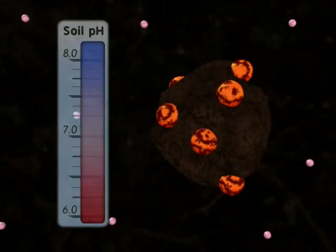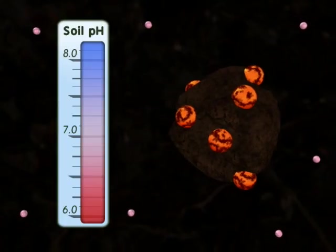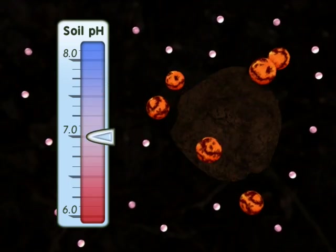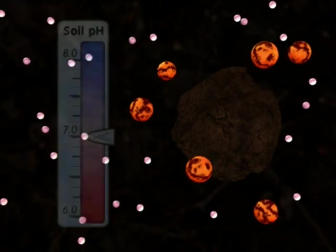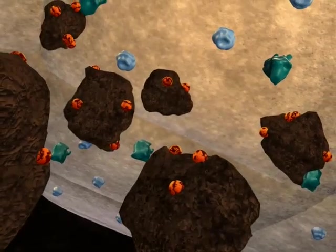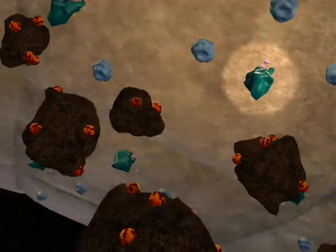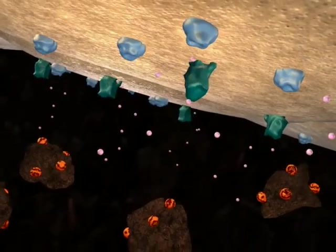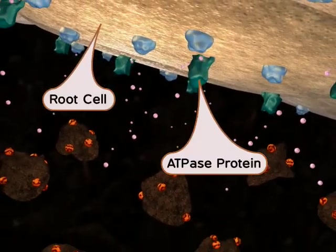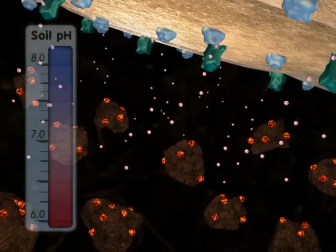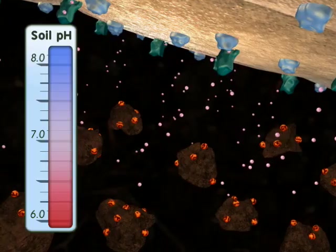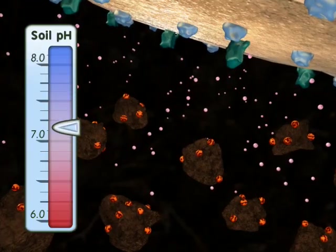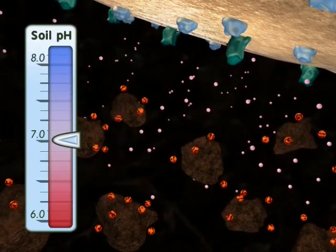Because of its chemical properties, iron is bound to soil particles when the soil pH is too high. The mineral remains bound until the pH is lowered. pH is a function of the concentration of hydrogen ions — the more hydrogen ions, the lower the pH. Hydrogen ions can be produced by the action of the hydrogen ATPase family of proteins. When these are active, hydrogen ions are released into the soil and the pH drops. As the pH drops, iron is released from the soil particles and becomes available as soluble iron.